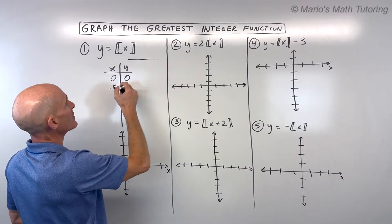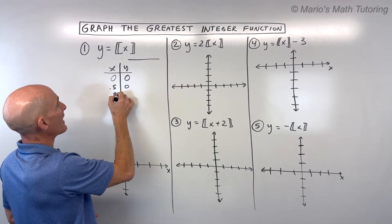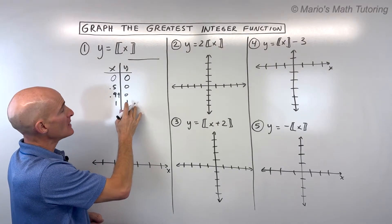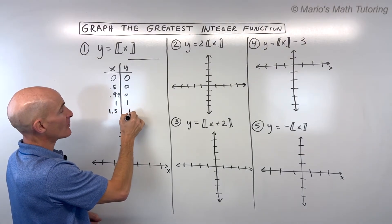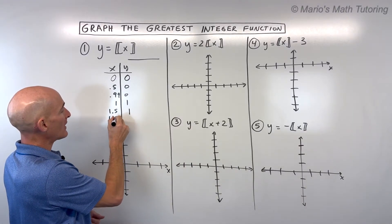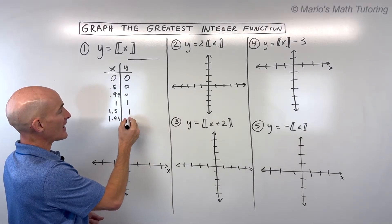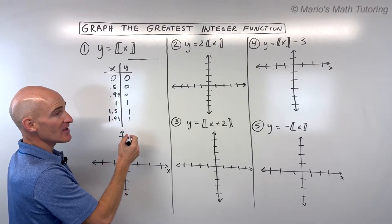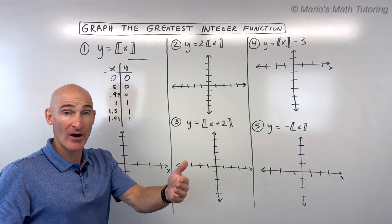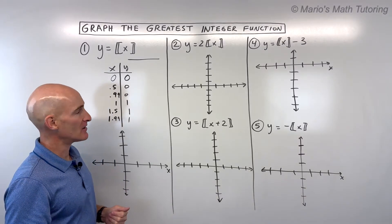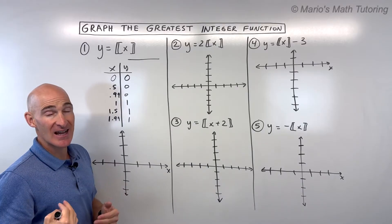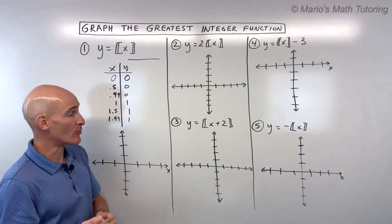Think about a number line: 0.999 is still going to be 0, and then 1 would stay at 1. If you're at 1.5, it rounds to 1 — it's always rounding to the left on that number line. 1.99999 is still going to be 1. Normally with 0.5 you'd round up to 2, but here it's always rounding down or to the left.